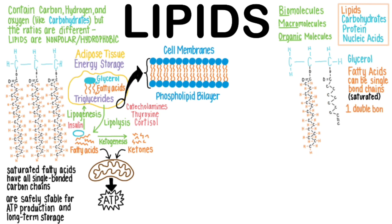One double bond in a fatty acid is called monounsaturated. Examples of foods rich in these are olives and avocados, but all natural foods contain mixes of various types of fatty acids.